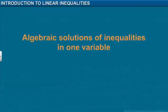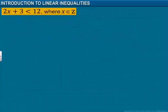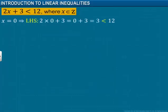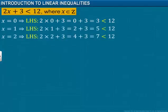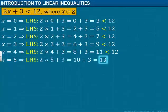We will now learn about algebraic solutions of inequalities in one variable. Consider the given inequality. Let's start substituting different values in place of x on the left-hand side of the inequality, starting with 0. We get the value of the left-hand side as 3, which is less than 12. Next, we keep on substituting subsequent values. We observe that when we substitute 5, we get the value on the left-hand side as 13, which is not less than 12.